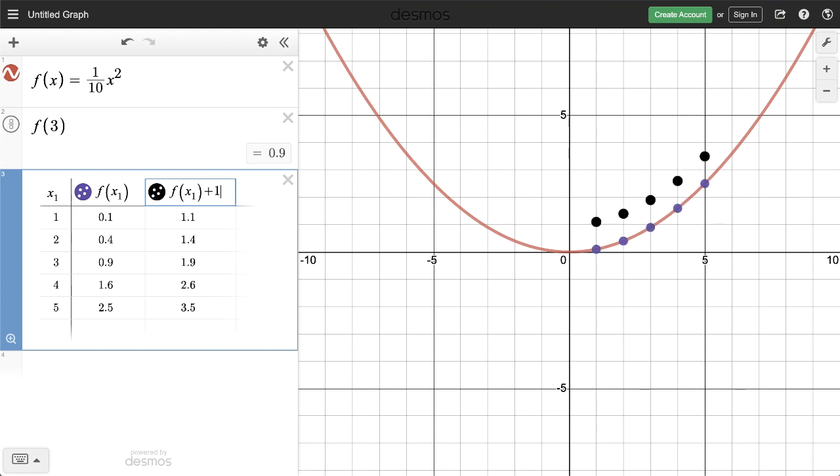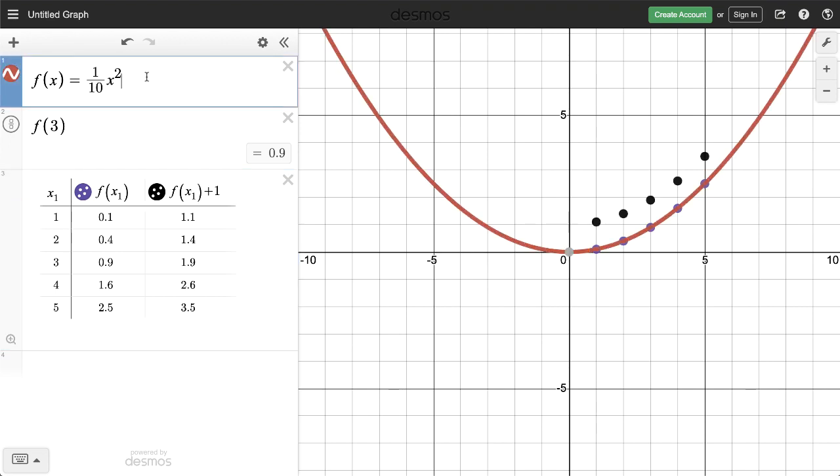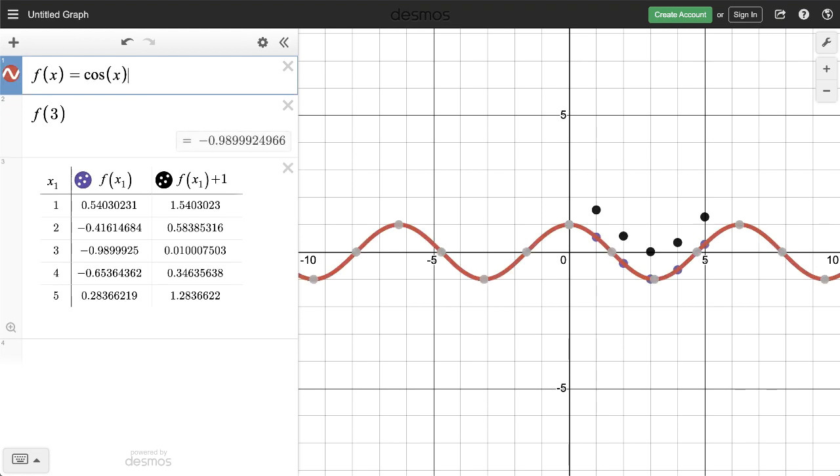Let's try one more thing to see the power of what we've built. If we change the original function, everything else is updated instantly. Say goodbye to our quadratic, and hello to the cosine curve.